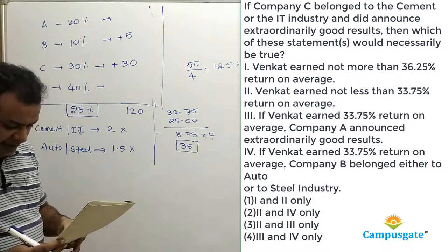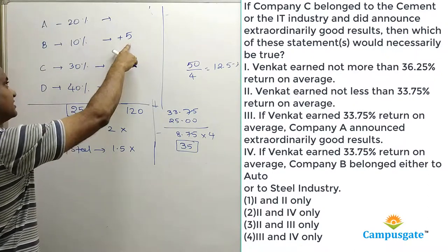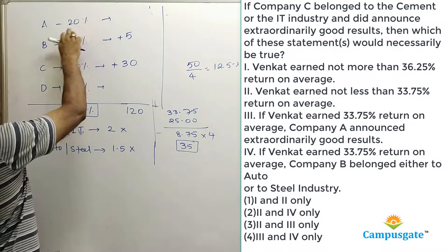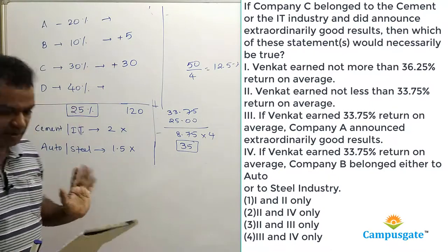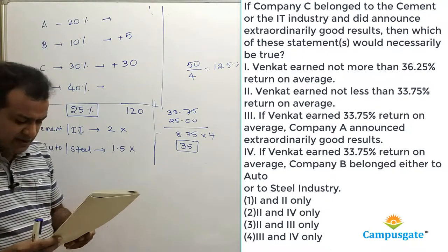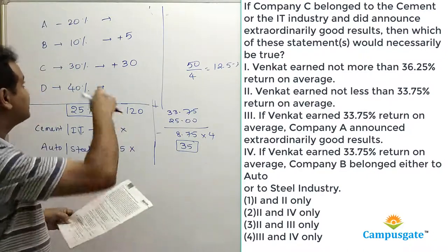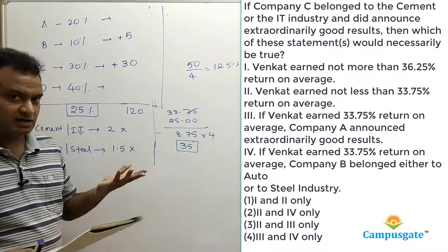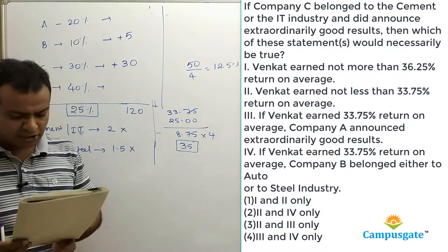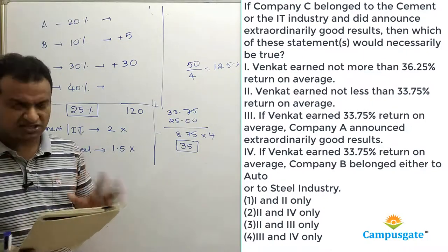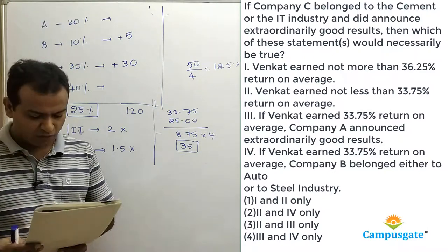Looking at the options: Option 2 — Venkat earned not less than 33.75% return on average — that is true, because when company B announces extraordinary good results this is the minimum return; with any other company it would be higher. Option 3 — if Venkat earned 33.75%, company A announced extraordinary good results — wrong, company A hasn't announced extraordinary good results in this scenario. Option 4 — if Venkat earned 33.75%, company B belongs to either auto or steel — that is true. Options 2 and 4 are correct, so we go for choice number 2.